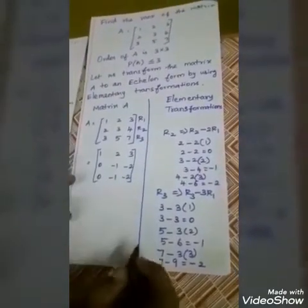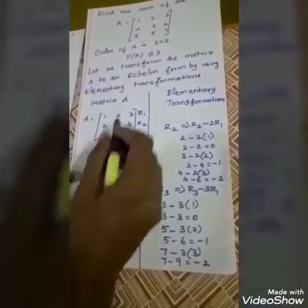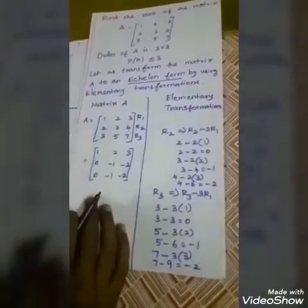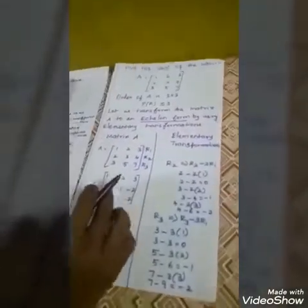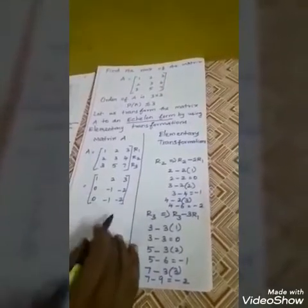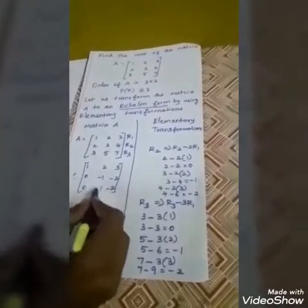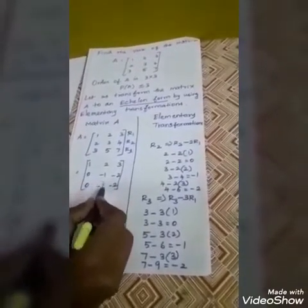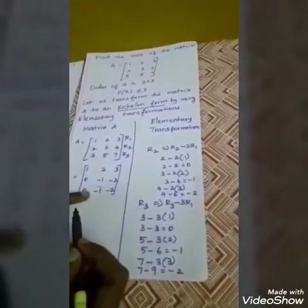Now, one more procedure we need to do to get Echelon form. The Echelon form requires every all-zero row to occur below every row with a non-zero entry. We need this element to also become 0. Minus 1 plus 1 will be 0, so R3 minus R2 will work.